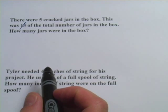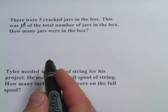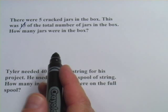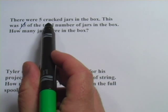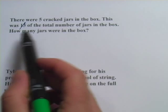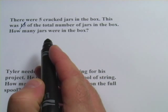In these problems, we are given a part of a certain number, a part of a whole, and asked to figure out what the whole is, what the whole number is. In this first question, it says there were five cracked jars in the box. This was one-third the total number of jars in the box. How many jars were in the box?